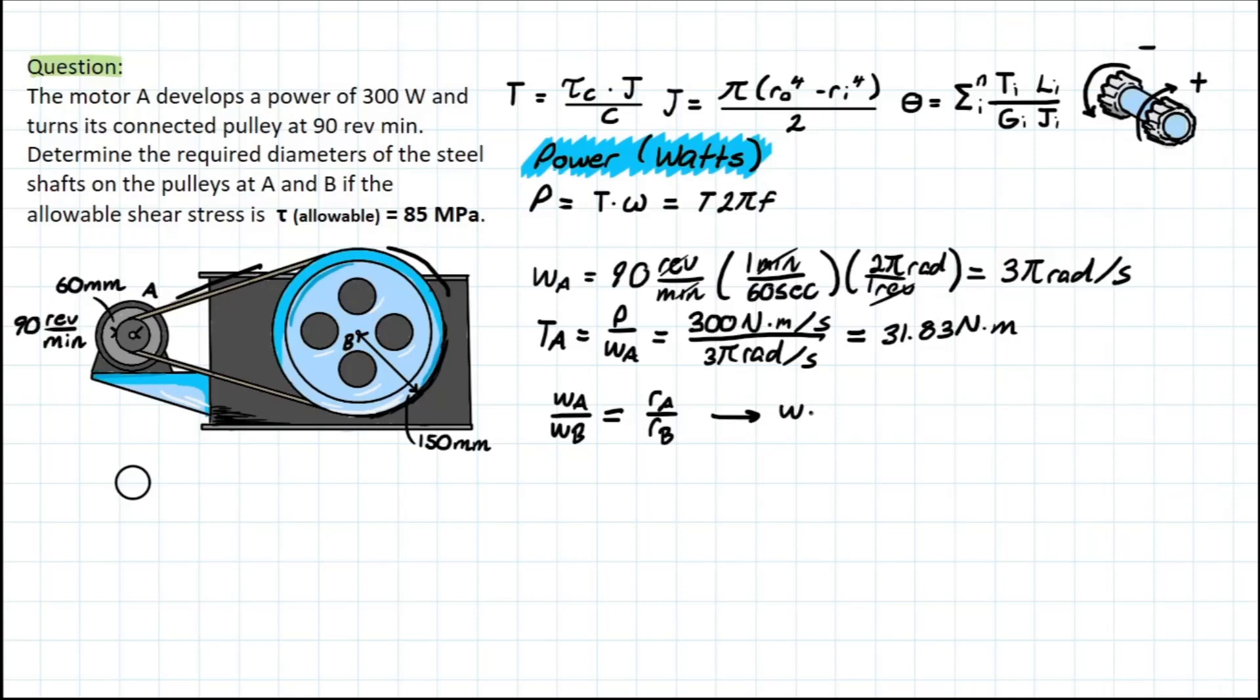So rearranging this for the angular velocity of B, we're going to be left with angular velocity of A times the radius of A over the radius of B. Now we can plug in our terms. We have 3 pi, which we solved for, and that's going to be radians per second. And the radius of A is 0.06 meters. And the radius of B is 0.15 meters. Solving that, you are left with an angular velocity of B equal to 1.2 pi radians per second.